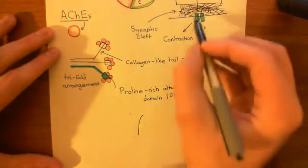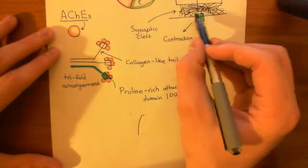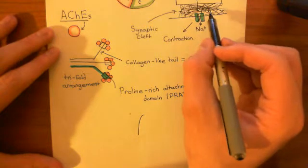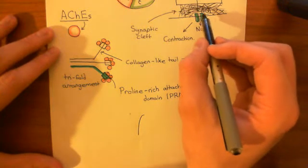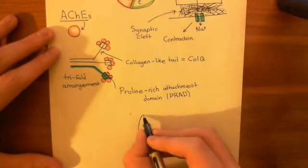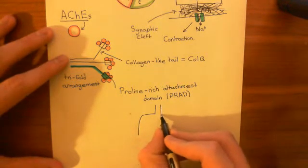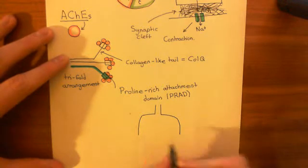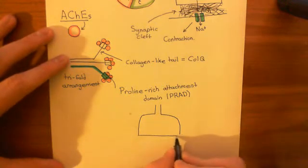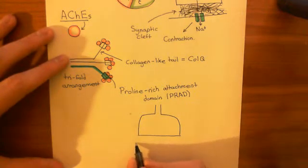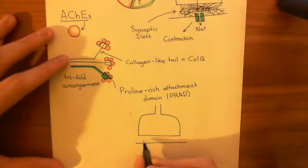So basically, this meshwork of fibers here, some of which are protein fibers, some of which are sugar fibers, is known as the basement membrane of the neuromuscular junction. So you have a mesh of fibers in this synaptic cleft.